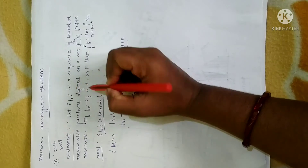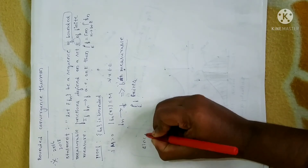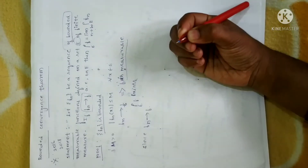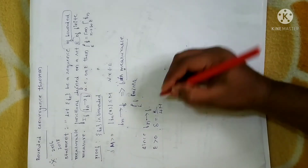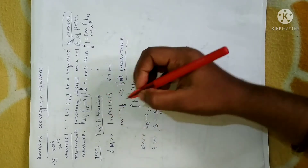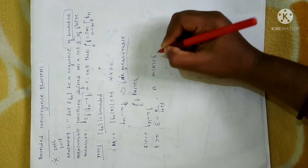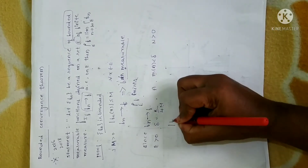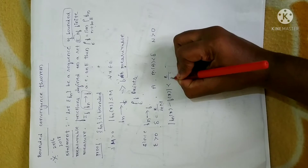Since Fn converges to F almost everywhere on E, using the definition of convergence: for every ε > 0, let δ = ε/(4M). Then there exists a set A with measure of A less than δ, and for any integer n greater than some N₀, we can write |Fn(x) − F(x)| < ε/(2·m(E)) for all x belonging to E minus A.